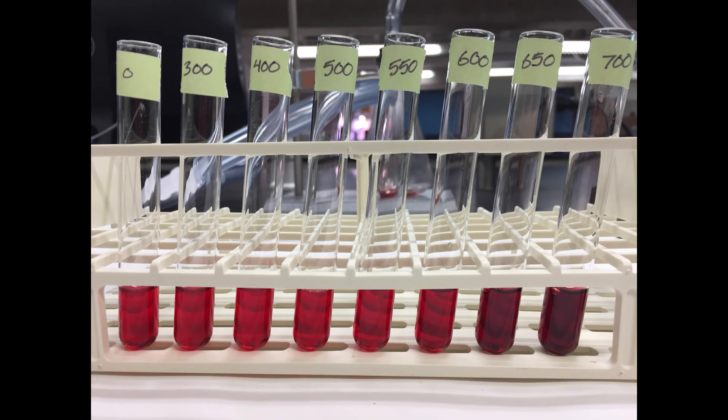Once you've finished all the vacuum pressures, your tubes should look something like this. You can see that the hemolysate gets darker as it becomes more deoxygenated under higher vacuum pressures.